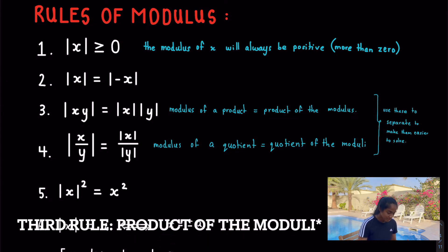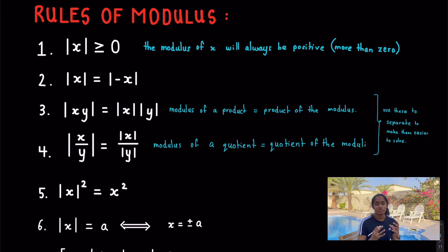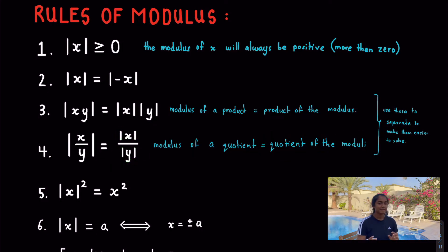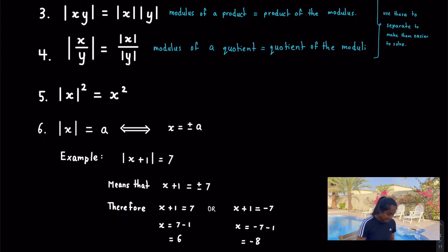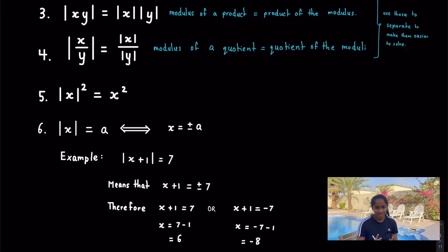Rule 3: the modulus of a product equals the product of the moduli. We use this to split expressions up and make them easier to solve. Rule 4: the modulus of a quotient equals the quotient of the moduli — again, we separate them to simplify solving. Rule 5, very important: the modulus of x all squared equals x squared. You need to know this one.